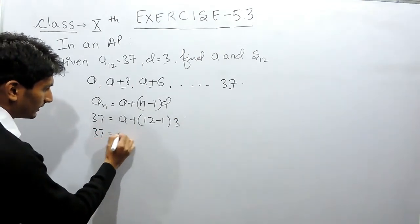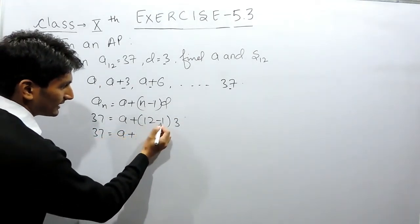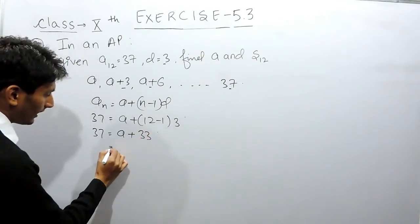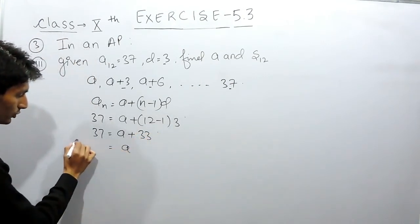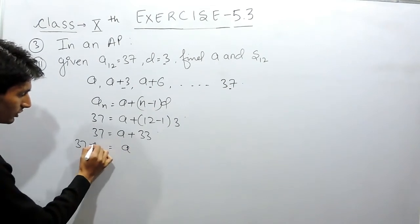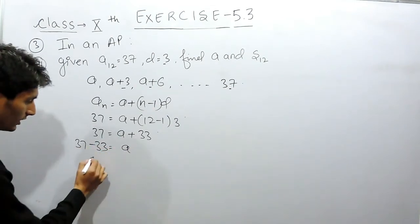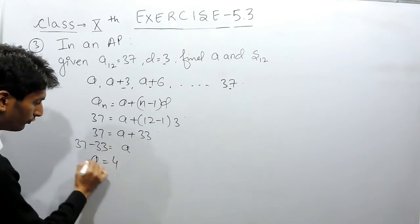Now solving this, A, this is 11, this is 33, and the value of A will be equal to 37. This constant when shifted to this side will be equal to minus 33, so the A will be equal to 4.